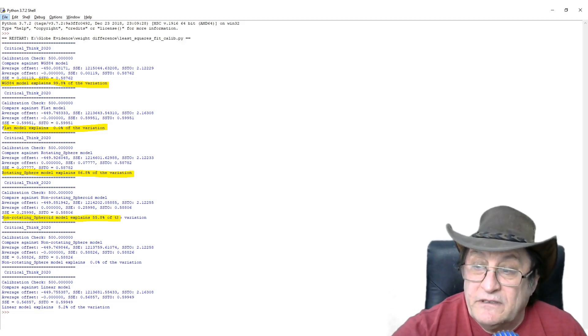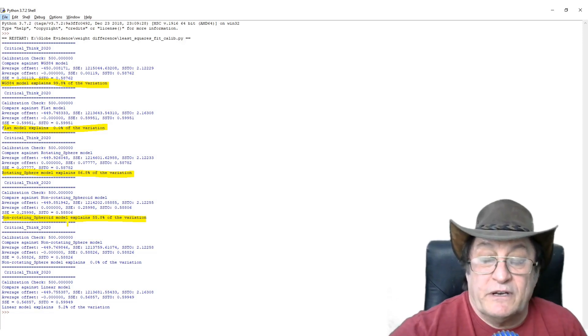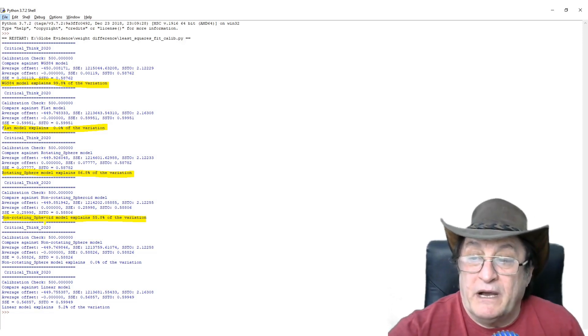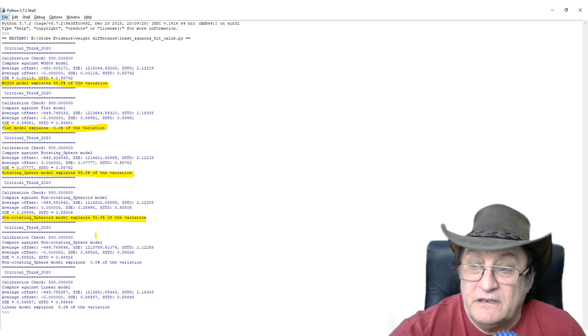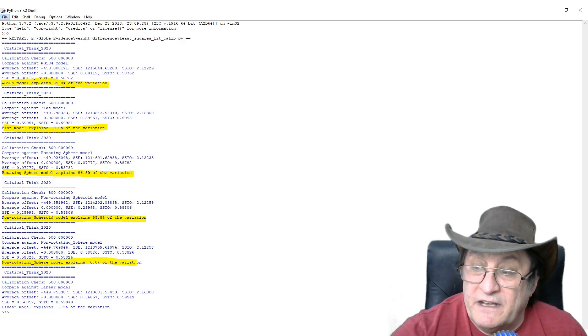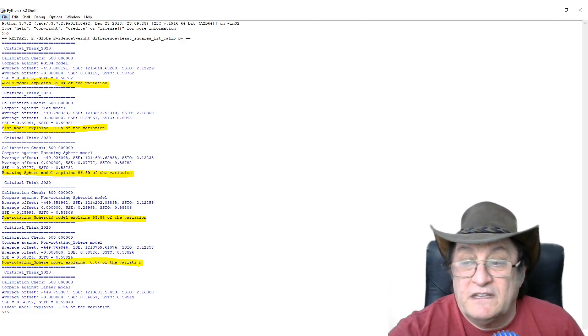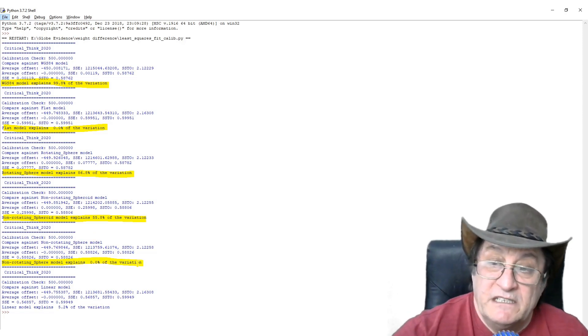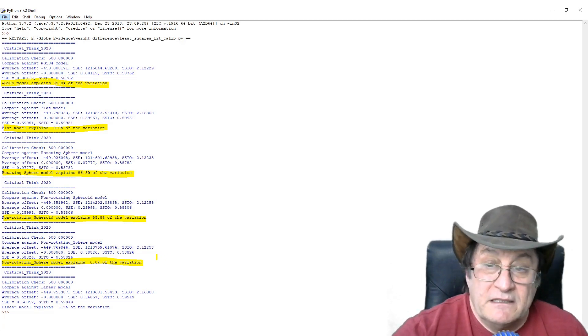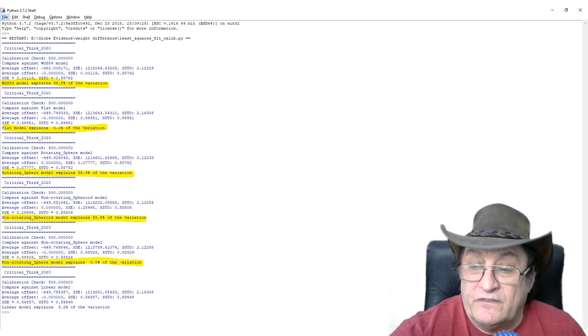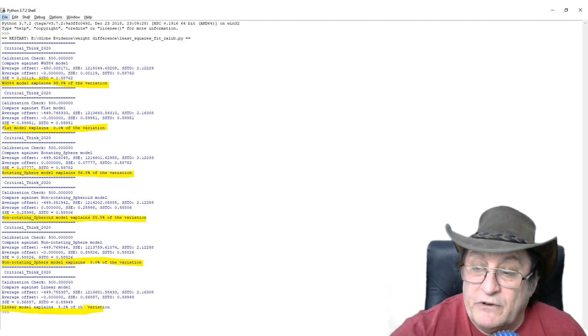Now a non-rotating spheroid, it's even worse. There's some variation because of an oblate shape, but non-rotation makes it, the data doesn't fit a non-rotating spheroid. And a non-rotating sphere, same thing as flat earth. On a non-rotating sphere, there would be zero variation.